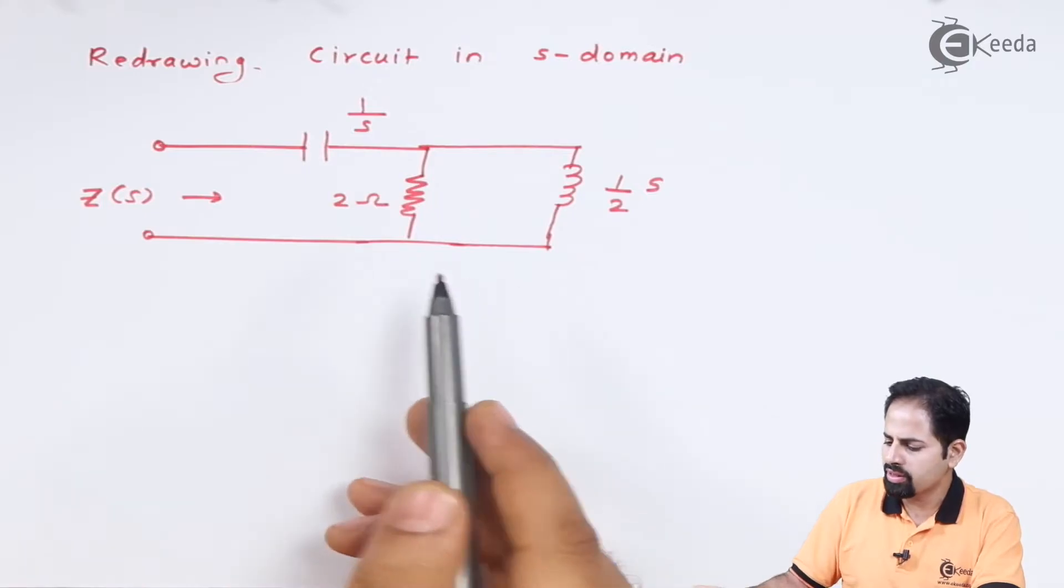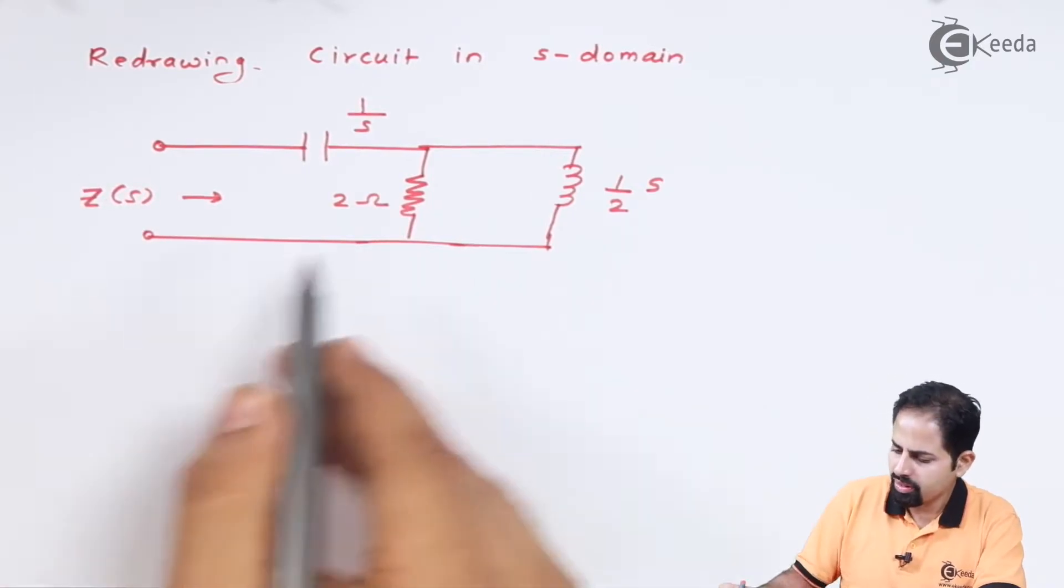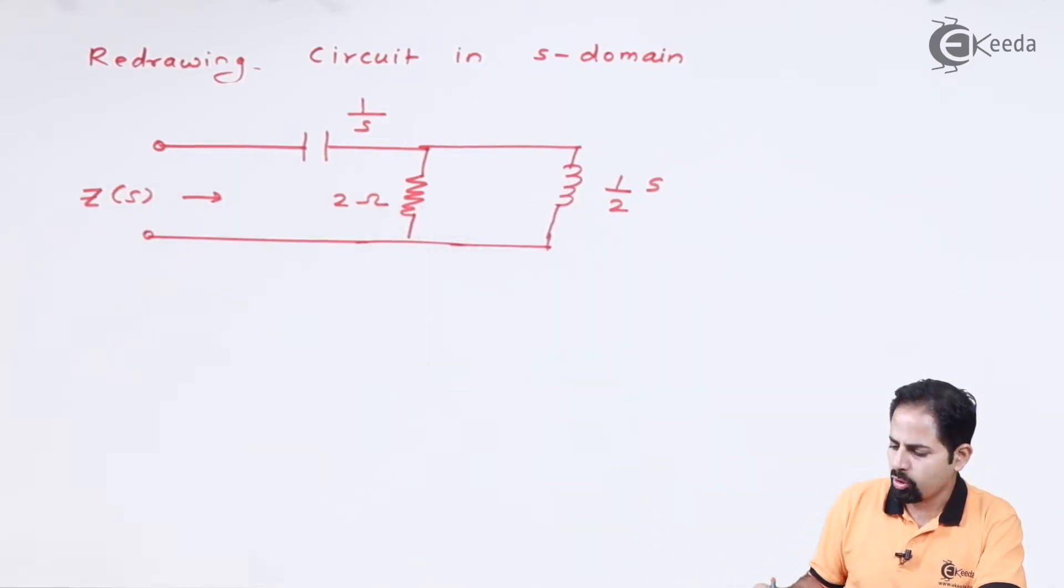Now we are supposed to find the poles and zeroes of this impedance function. So we need to first find impedance. You can see it is very simple. Impedance is parallel combination of these two plus 1 upon S.